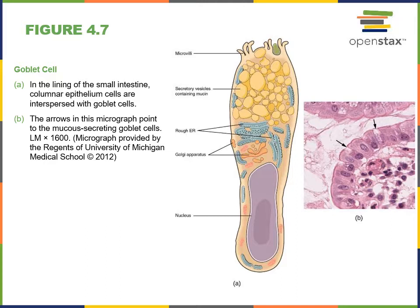A gland is one or more cells that produce secretions. Endocrine glands produce secretions into the body that travel through the bloodstream as hormones — chemical messages that regulate the functions of other cells and organs throughout the body. Examples include the thyroid gland, pituitary gland, adrenal glands, and the gonads — testes and ovaries. These will be studied in more detail when covering the endocrine system.